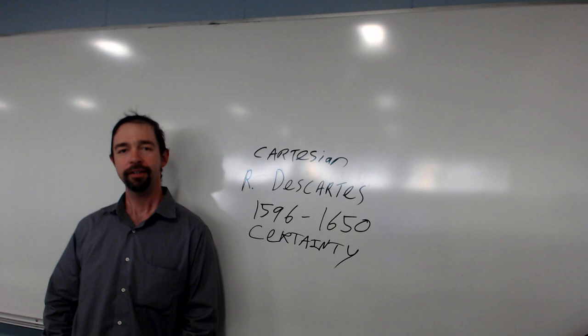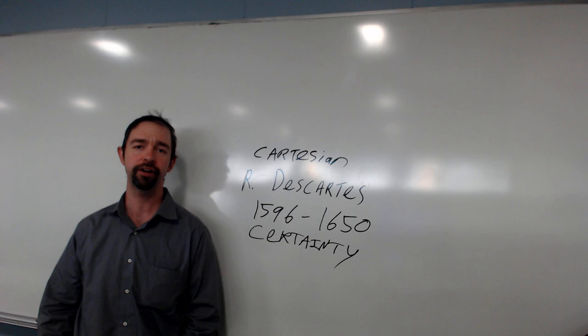Just like Thomist is the adjective we use for Thomas Aquinas. Cartesian is what we use when we're talking about stuff that's about Descartes. So he was interested in math, and he liked math a lot because it gave him certainty. You know, in philosophy, you go through the philosophy department, and what do you hear us arguing about? Everything.